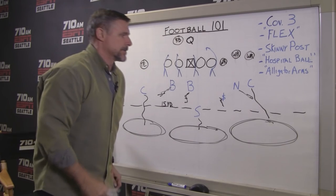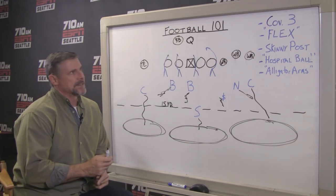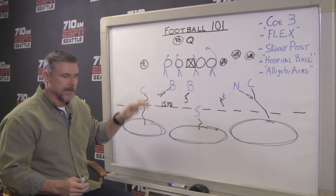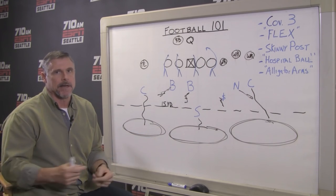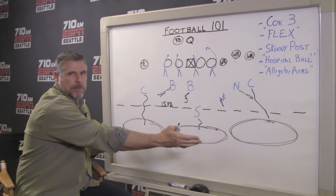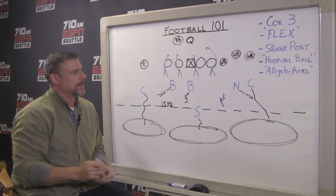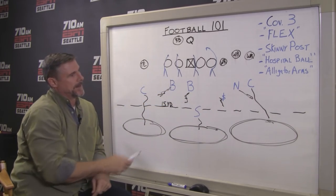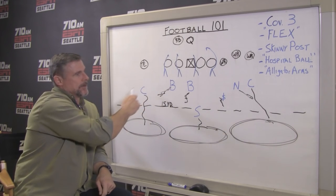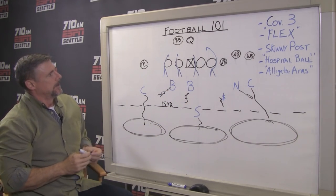In cover two, which the Seahawks run a little less than cover three, you've only got two guys deep, so you get an extra dropper underneath — five guys instead of four. A lot of people complain about the Seahawks giving up completions in the underneath zones, but that's because you're playing cover three and protecting the deep part of the field. You'd much rather have them dink and dunk the ball down the field.